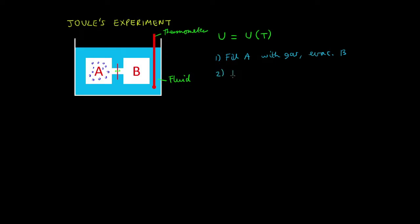Now Joule then waited for thermal equilibrium to be achieved between the system which is the gas in chamber A and the calorimeter. So basically by reading the thermometer you'll read a constant temperature that does not change over time which indicates that there's no heat exchange between the fluid in the calorimeter and the gas. So therefore Q is equal to zero.